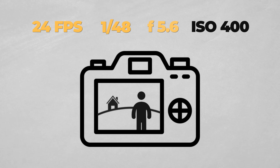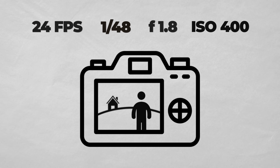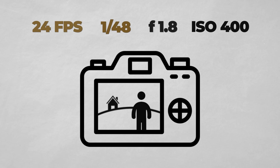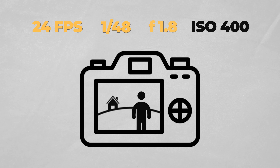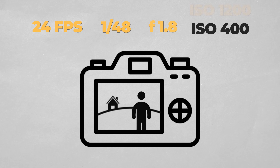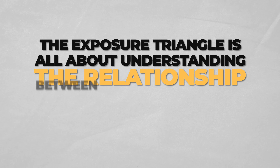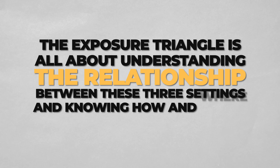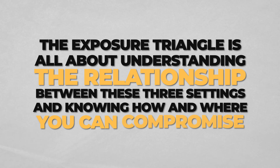Or if you need the image to be brighter and your shutter speed is already at that 180-degree rule and your aperture is as wide as it gets, then you may have to bump up the ISO even though that means a little bit more noise in your image. The exposure triangle is all about understanding the relationship between these three settings and knowing how and where you can compromise.